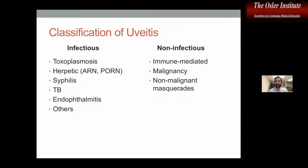In terms of etiology, we have infectious and non-infectious. This is a big differential because it impacts treatment a lot. The non-infectious side is predominantly immune-mediated, and there are importantly malignant masquerades like lymphoma or leukemia. Syphilis is the one thing that can cause any kind of inflammation and affect any part of the eye, so we always work patients up for syphilis. I generally always work patients up for tuberculosis as well, because therapy can be dictated by that.